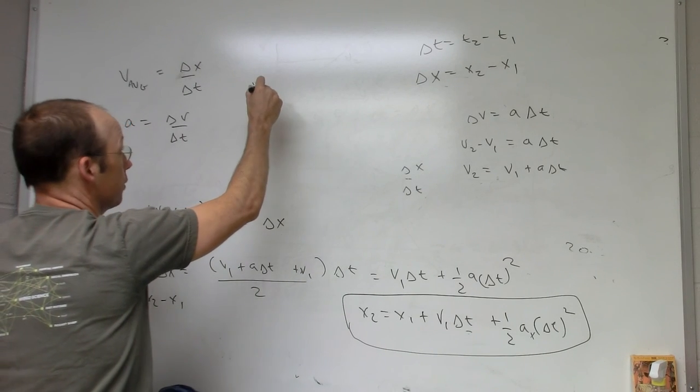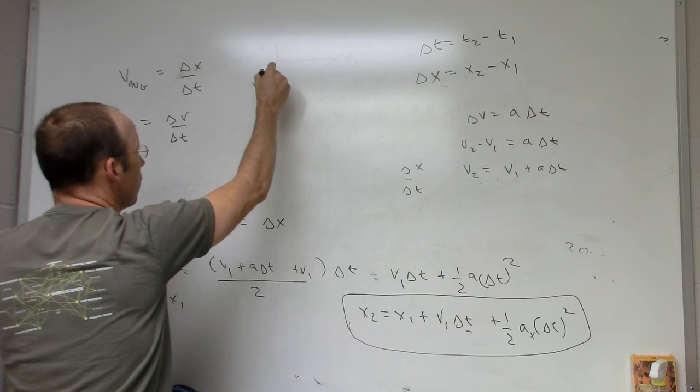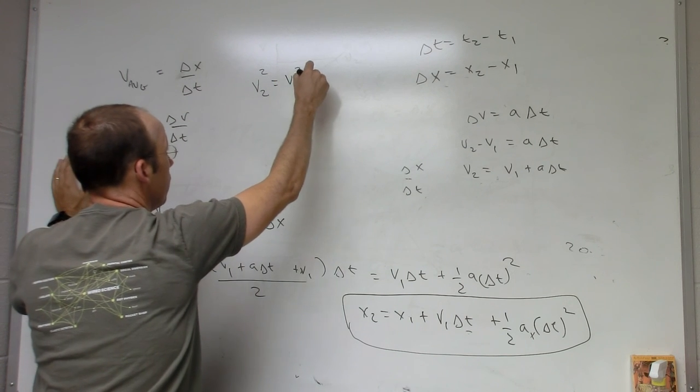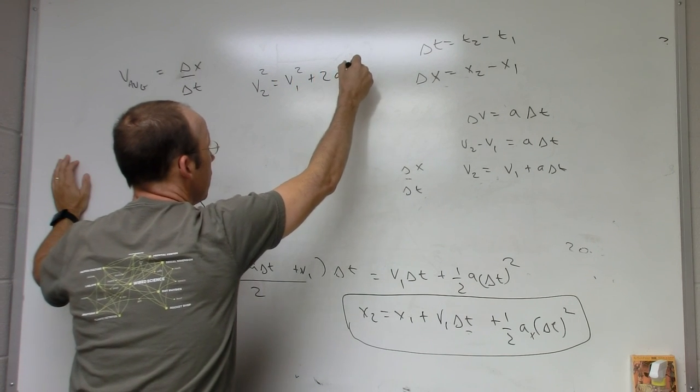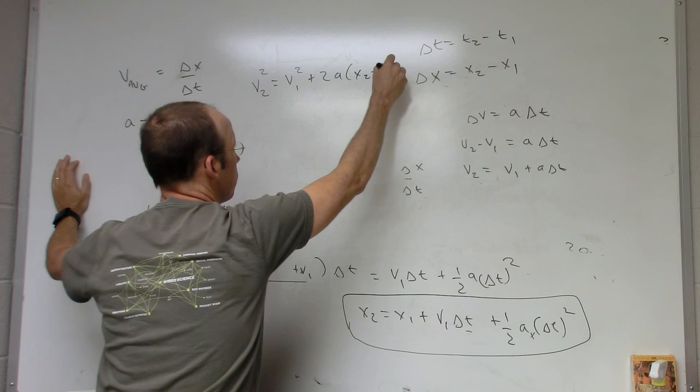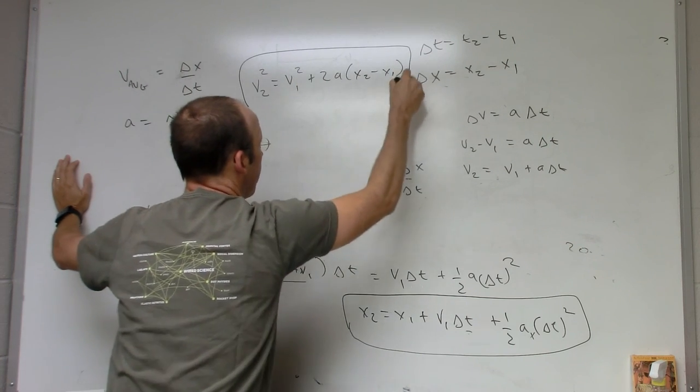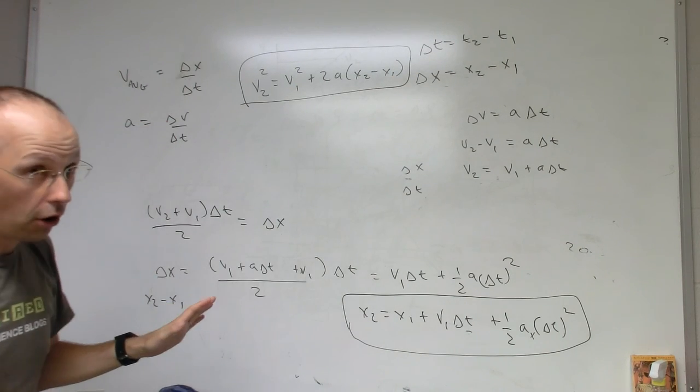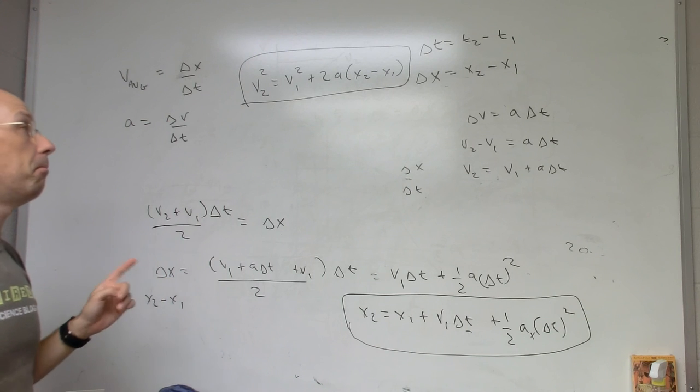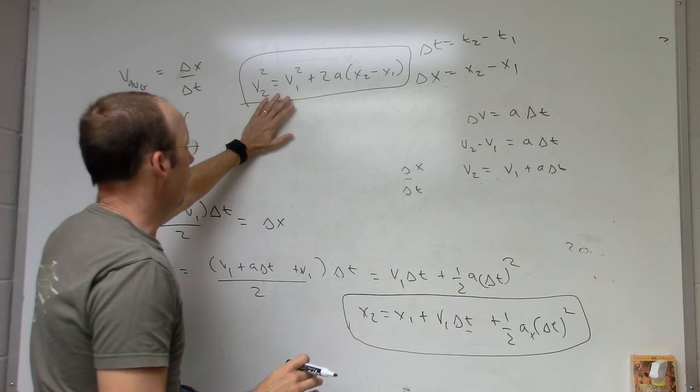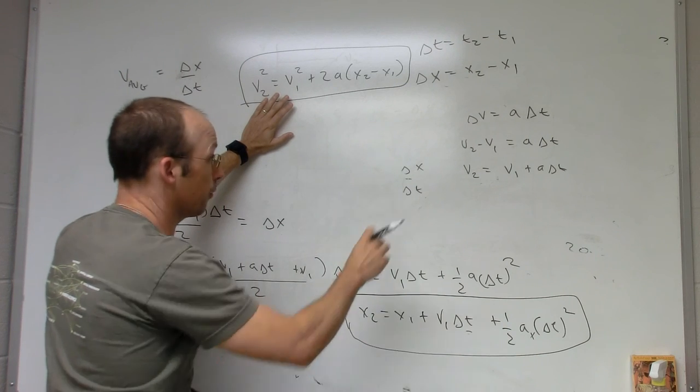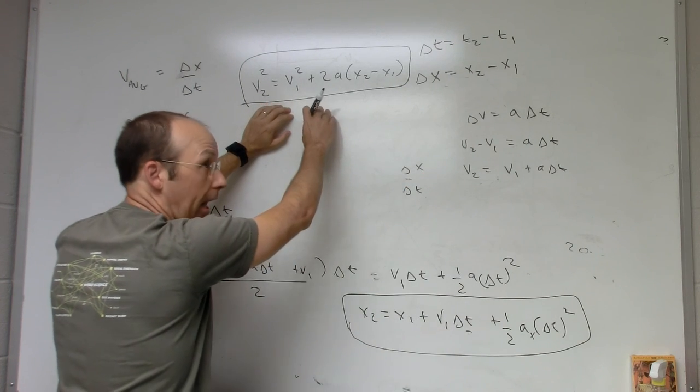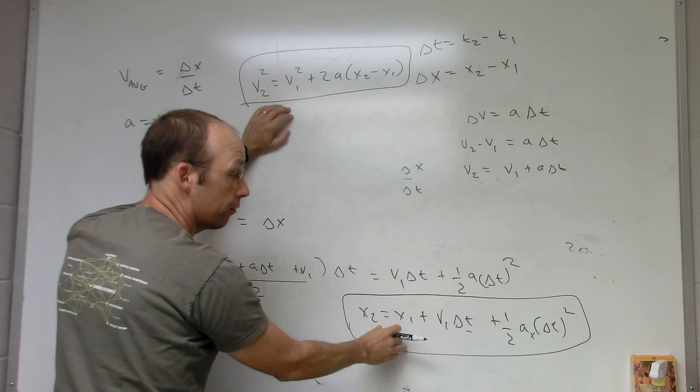You get this other kinematic equation, and these are all in the x direction, v2 squared equals v1 squared plus 2a times x2 minus x1. That's the other common kinematic equation. It's not hard to derive. And there's a better way to derive it later using energy. But this just comes from eliminating t. So this one does not have t in the equation, and this one does.